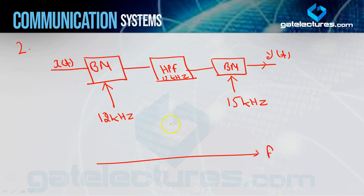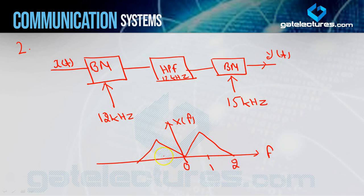The figure given shows XF — the Fourier transform of x(t). It is a triangular shape: on the positive side with peaks at 1 and 2 kHz, and symmetrically on the negative side at -1 and -2 kHz. The question asks: calculate the positive frequencies where YF has spectral peaks — i.e., where the amplitude of y(t)'s Fourier transform is maximum.